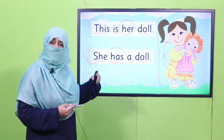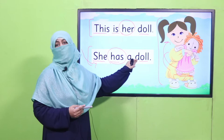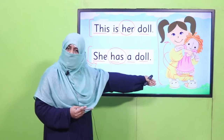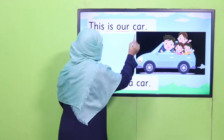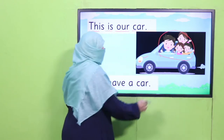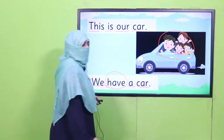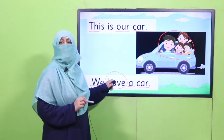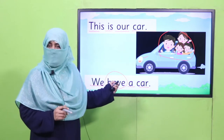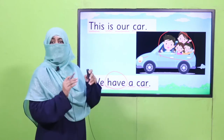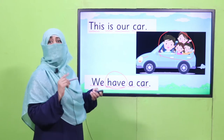This is what we are learning. Previously, we learned: this is her doll. And now, in grade 2, you are learning: she has a doll. This is another way to express that this doll belongs to this girl. I'm going to show you another example. This is our car — this car is ours. This is one way to tell it. And the other way: we have a car. We are telling we have a car, meaning this car belongs to us. This is how we use the words has and have.